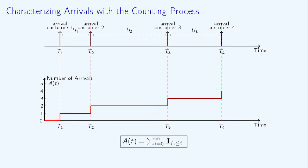Now let's go back to the characterization of customers' arrivals. Ti denotes the arrival time of customer i, and ui is the inter-arrival time between customer i and customer i plus 1.